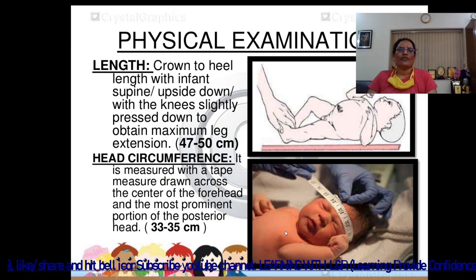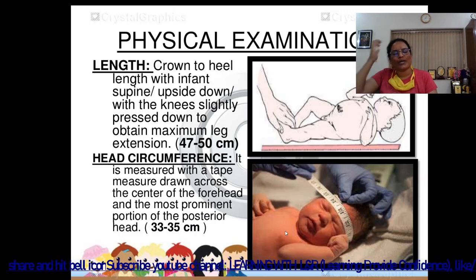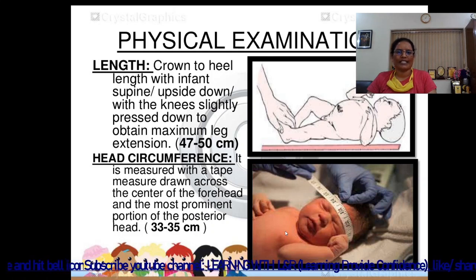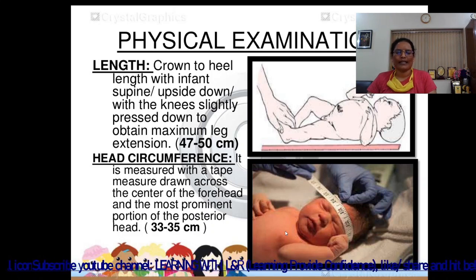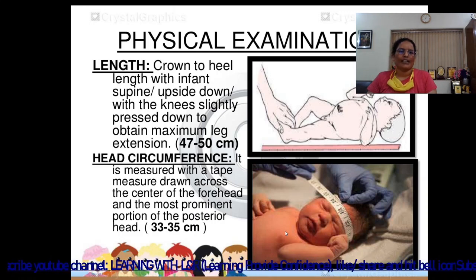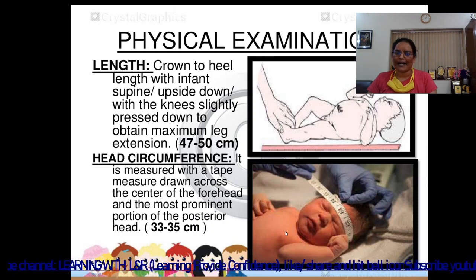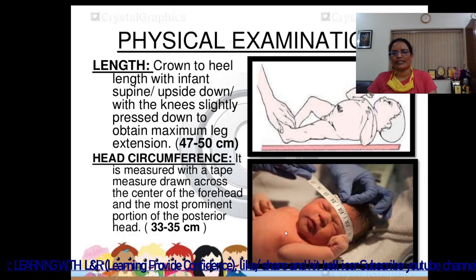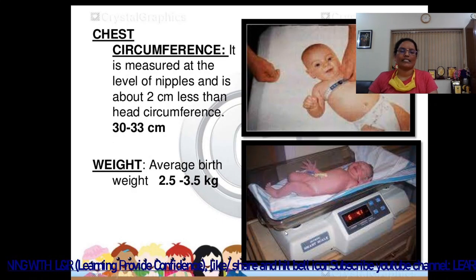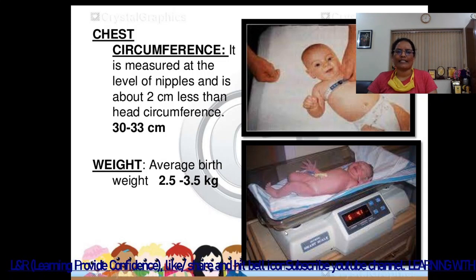Physical examination begins with length. Crown-to-heel length is measured with the infant's spine straight and knees slightly pressed down to obtain maximum leg extension. The normal length is 47 to 50 centimeters. Head circumference is measured with a tape drawn across the center of the forehead and the most prominent portion of the posterior head; the normal range is 33 to 35 centimeters. Chest circumference is measured at the level of the nipples and is about 2 centimeters less than head circumference; the normal range is 32 to 33 centimeters.